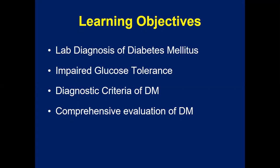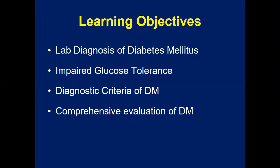We'll discuss the lab diagnosis and what is impaired glucose tolerance — a patient may not be labeled as clearly diabetic or as clearly non-diabetic. We'll also cover the diagnostic criteria of diabetes mellitus developed by WHO, the International Federation of Diabetes, or the American Diabetes Association, and what comprehensive evaluation must be done to assess complications.